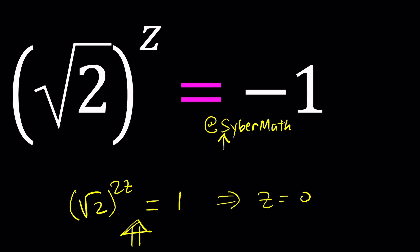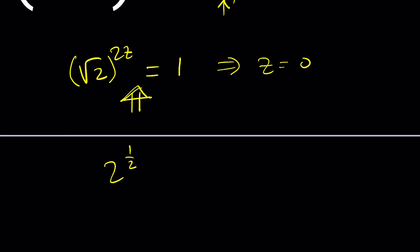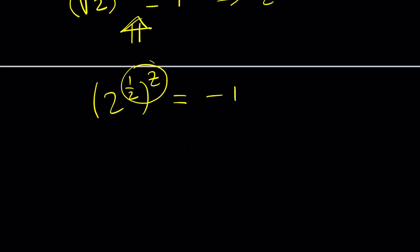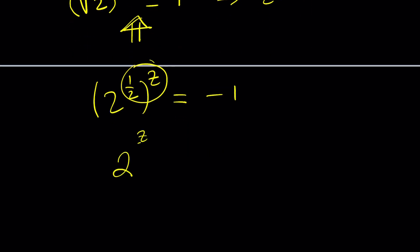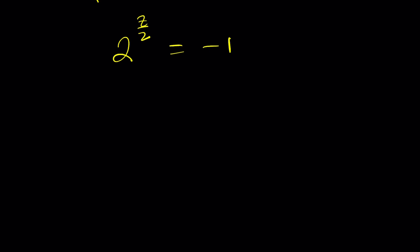Okay the next approach is maybe we can write the square root of 2 as 2 to the power 1 half and then write it as 2 to the power z over 2 equals negative 1. But again we run into the same problem. How do you get a negative 1 from a positive base? Let me answer that question right now. It is possible with complex numbers. Thanks to Euler we have something called the polar form of a complex number. Let's go ahead and talk about that and we're going to apply it to this equation.